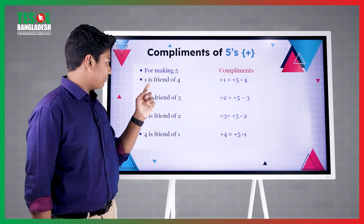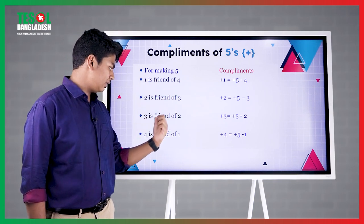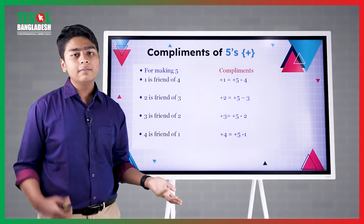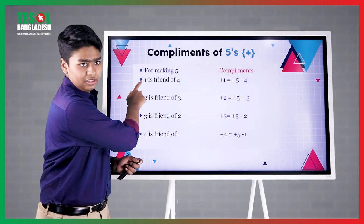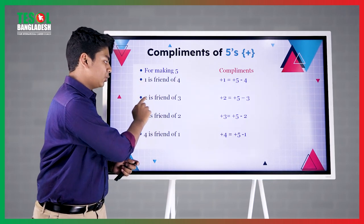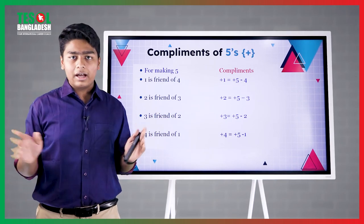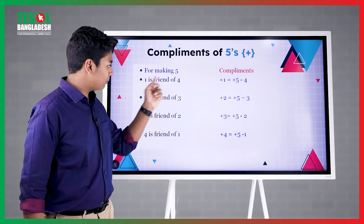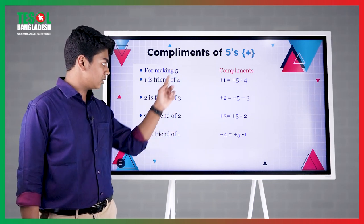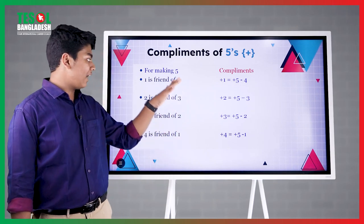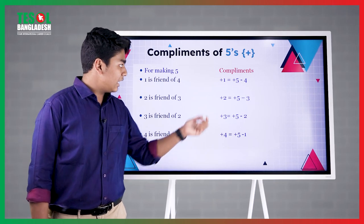Now, for making 5: 1 is the friend of 4, 2 is the friend of 3, 3 is the friend of 2, 4 is the friend of 1. It's simple — if 1 is the friend of 4, then 4 is definitely the friend of 1. And if 2 is the friend of 3, then 3 is definitely the friend of 2. So if we add all these: 1 plus 4 is 5, 2 plus 3 is 5, 3 plus 2 is 5, and 4 plus 1 is 5. For making 5, these are the friends you need to remember.